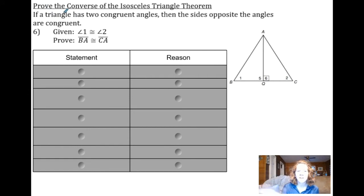We are going to be proving the converse of the isosceles triangle theorem. That theorem states that if a triangle has two congruent angles, then the sides opposite the angles are congruent. In this case, the only thing we're given in the statement is that angle 1 is congruent to angle 2.